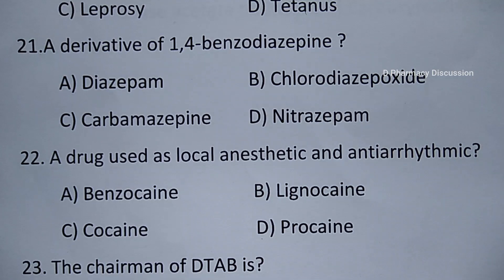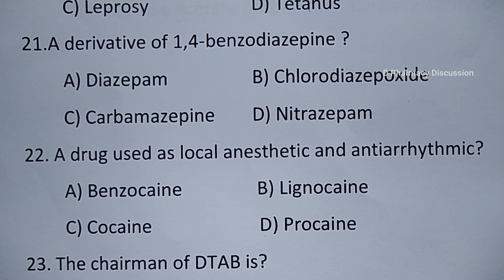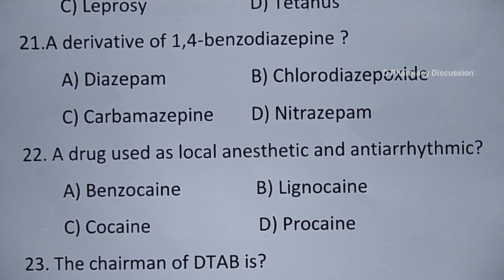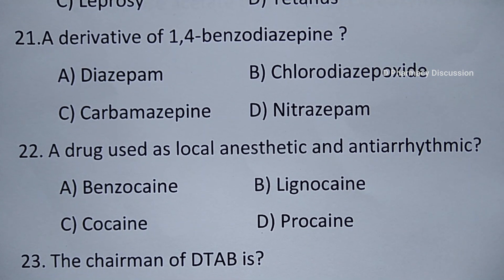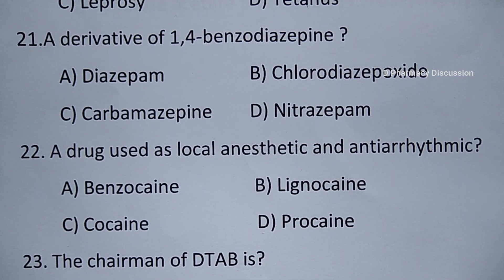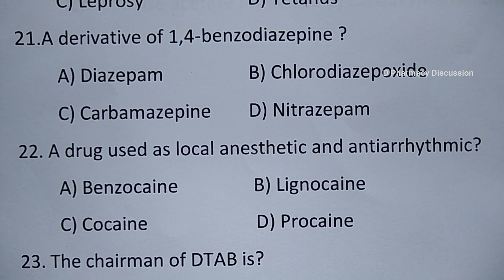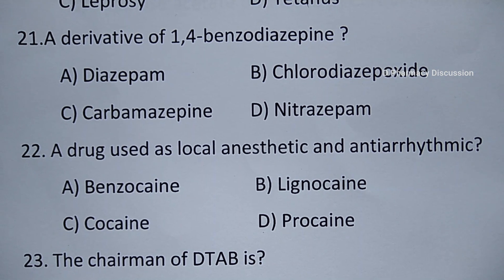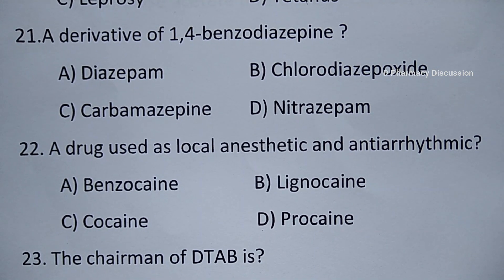For AIDS, the diagnostic tests performed are PCR test and ELISA test. In case of typhoid, the diagnostic test is called Widal test. VDRL test and Wassermann test are used for the diagnosis of syphilis.